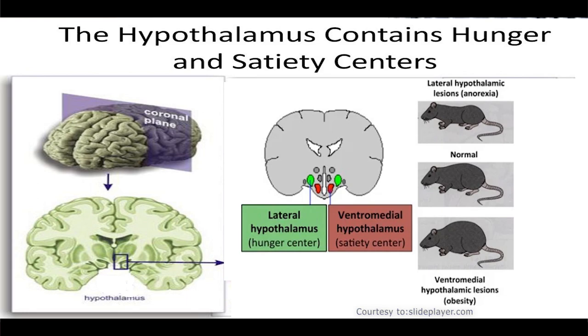Conversely, damage to this area on both sides of the hypothalamus causes the animal to lose desire for food, sometimes causing lethal starvation.